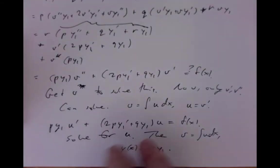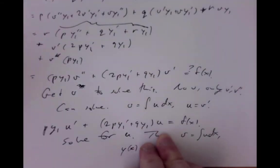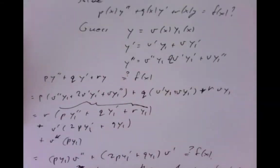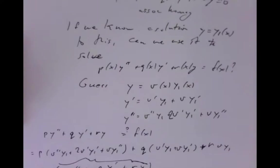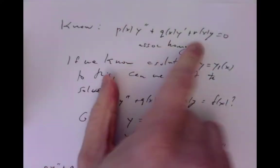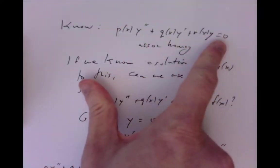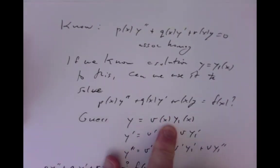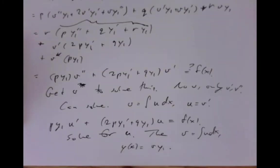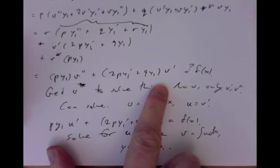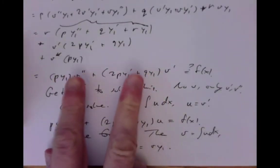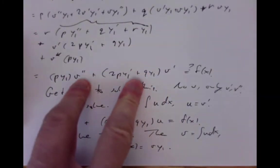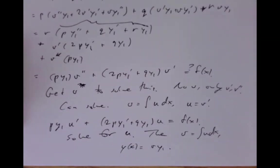The abstract theory says: if you know a solution of the associated homogeneous equation, multiply it by an unknown function v and plug in. When you're done, you should be able to come up with an equation whose solution gives you the particular solution to the inhomogeneous problem.